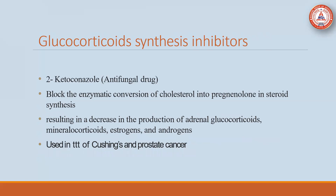The second drug for treatment of Cushing syndrome is ketoconazole, which is basically an antifungal drug. It blocks the enzyme conversion of cholesterol into pregnenolone in steroid synthesis, resulting in decreased production of glucocorticoids, mineralocorticoids, estrogen, and androgen. It is used in the treatment of Cushing syndrome and prostate cancer.